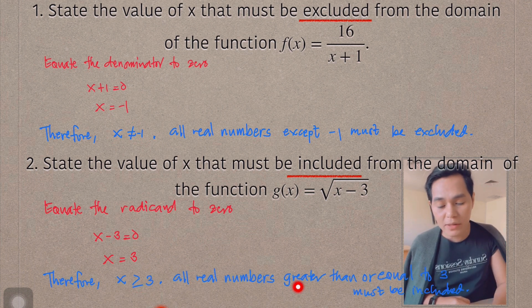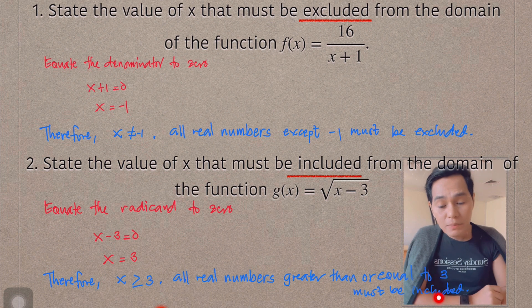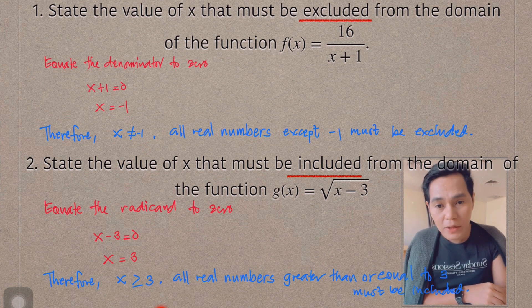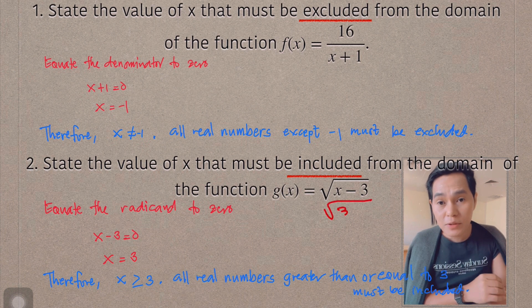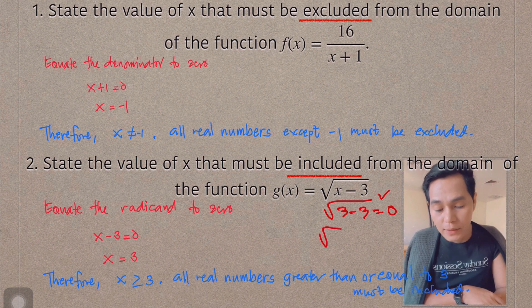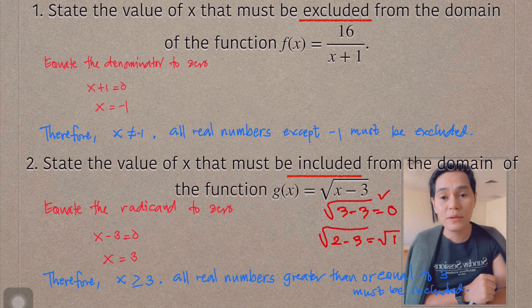Then you would say x should be greater than or equal to 3. Or you would say, all real numbers greater than or equal to 3 must be included. Why? If you let x equal to 3 here, then that becomes equal to 0. And you can get the root of 0. If you are going to consider the number below 3, for example, 2, what will happen? That becomes negative 1. And that's no longer possible. So that's how you answer this particular problem.